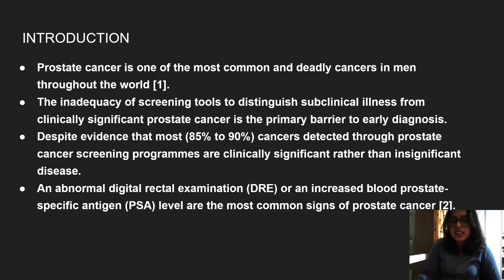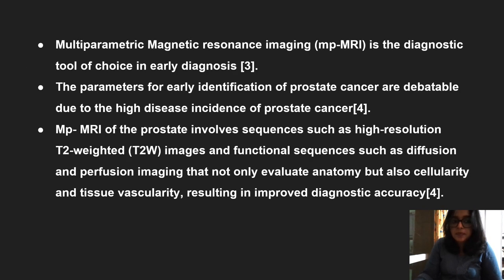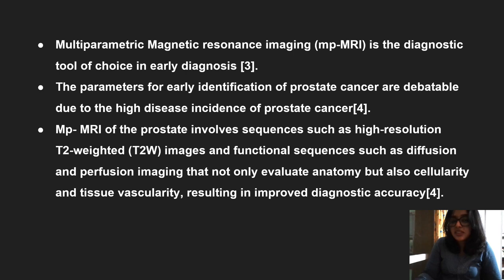Coming to our introduction, prostate cancer is one of the most common and deadly cancers in men throughout the world. The inadequacy of screening tools to distinguish subclinical illness from clinically significant prostate cancer is a primary barrier to early diagnosis. Despite evidence that most cancers detected through prostate cancer screening programs are clinically significant, an abnormal digital rectal examination or increased serum prostate specific antigen levels are the most common signs. Multi-parametric MRI is the diagnostic tool of choice in early diagnosis, though parameters for early identification remain debatable.